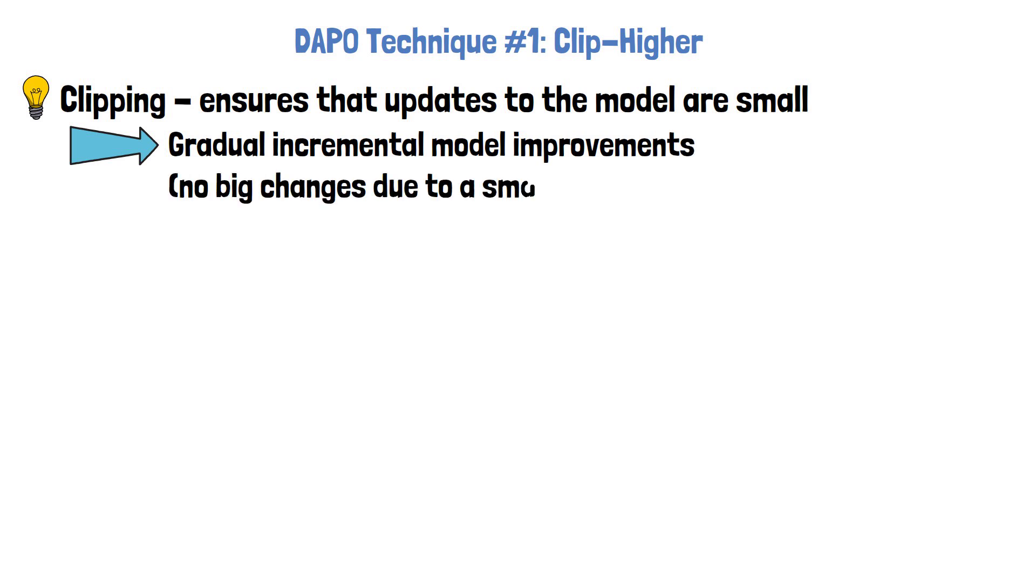Think that each training step is not exposed to the full training data, but rather just to a small batch of training samples. We don't want any single small batch to have a dramatic impact. Gradual improvements over time lead to a more stable training.